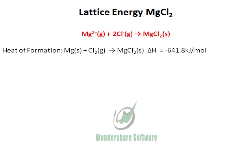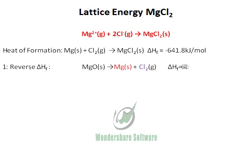For the calculation of lattice energy, the first step is to reverse the heat of formation. This is the way all the addition comes out correct. So when we reverse the heat of formation, the sign becomes positive.